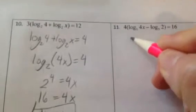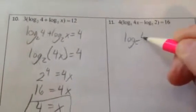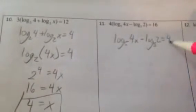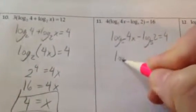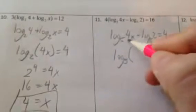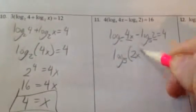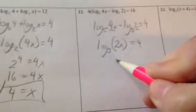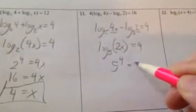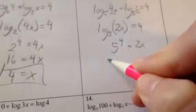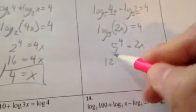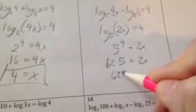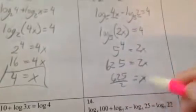And again. So divide by the 4 first. Log base 5 of 4x minus log base 5 of 2 will equal 4 when you divide by 4. Smoosh these logs together. I can do 4x divided by 2 will be 2x, that'll equal 4. I write it in exponential form. 5 to the 4th equals 2x. So 625 equals 2x. So 625 divided by 2 will equal x.